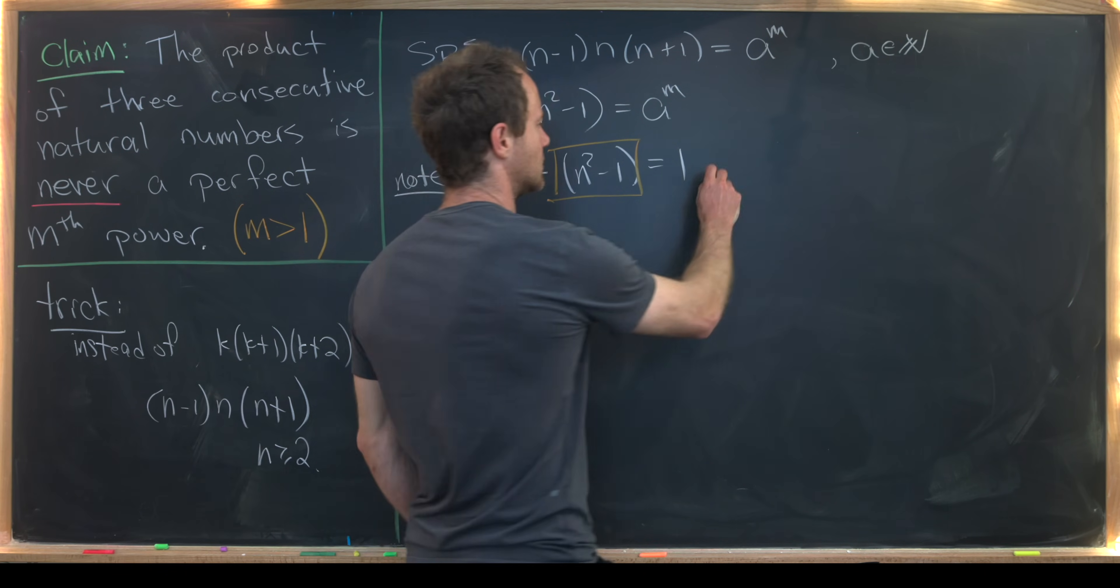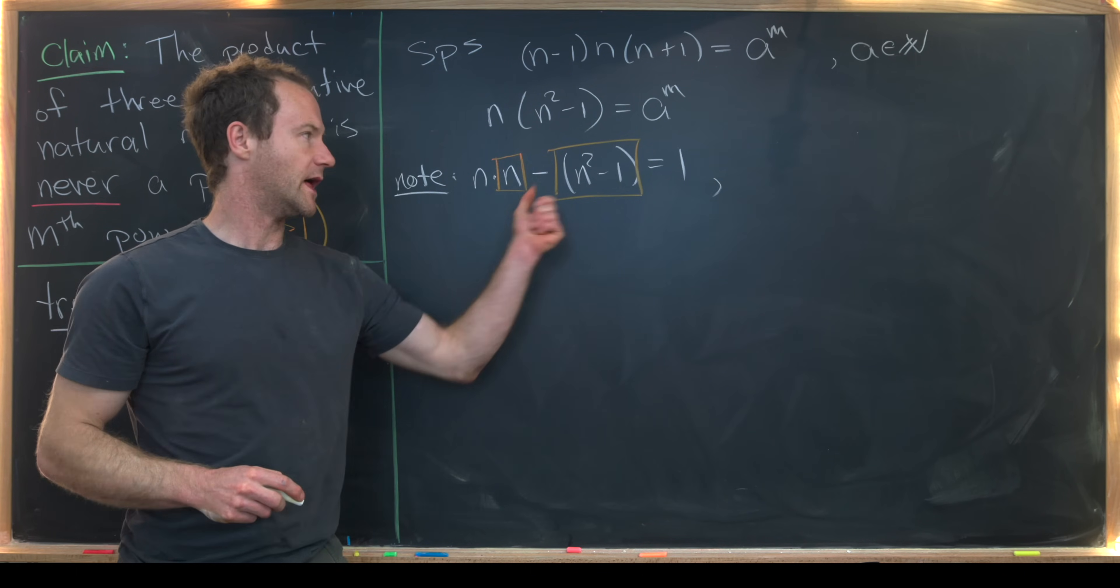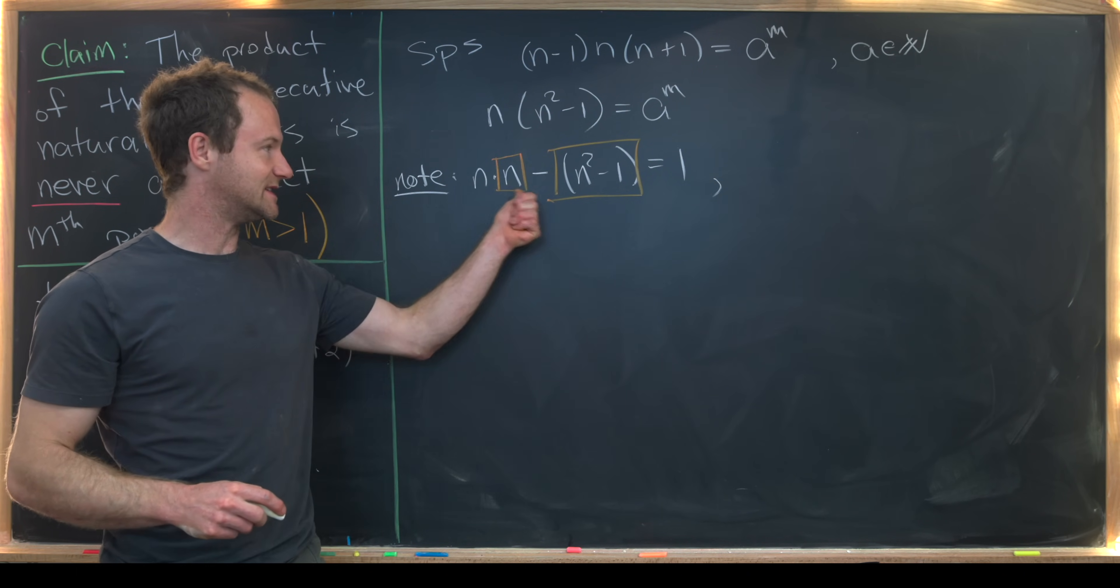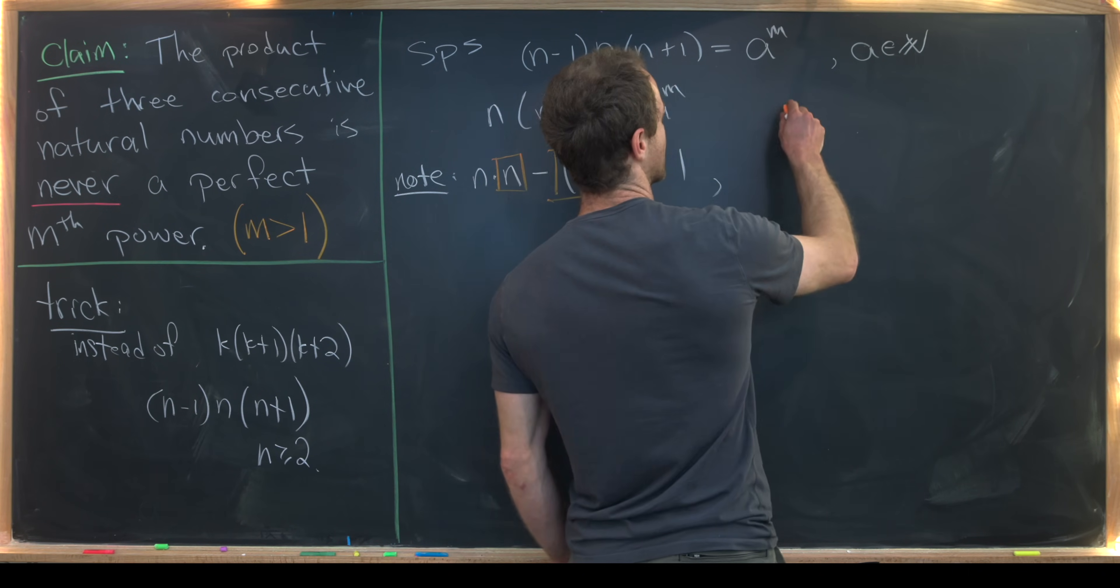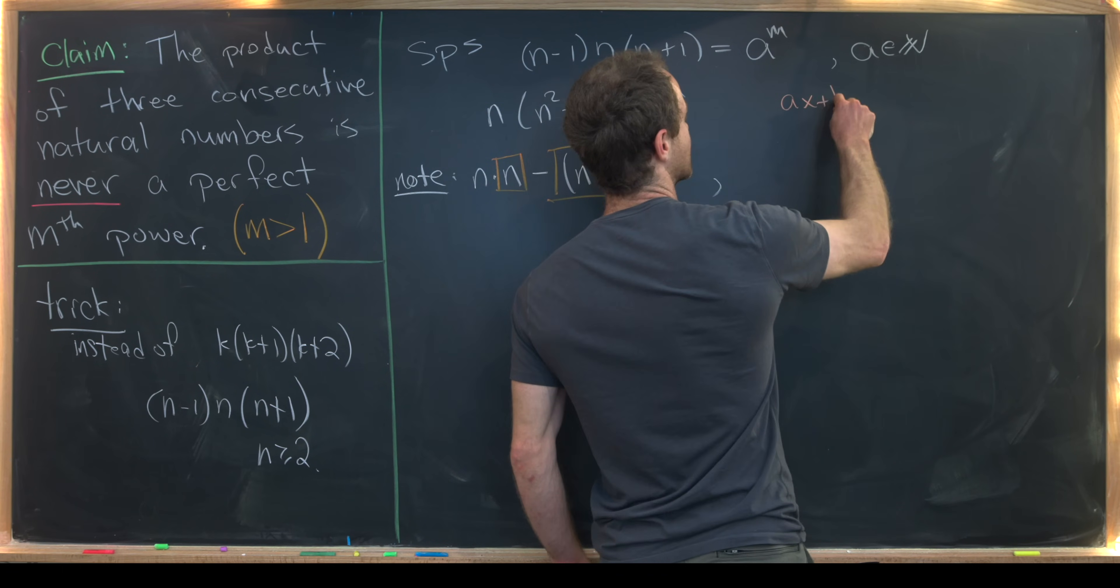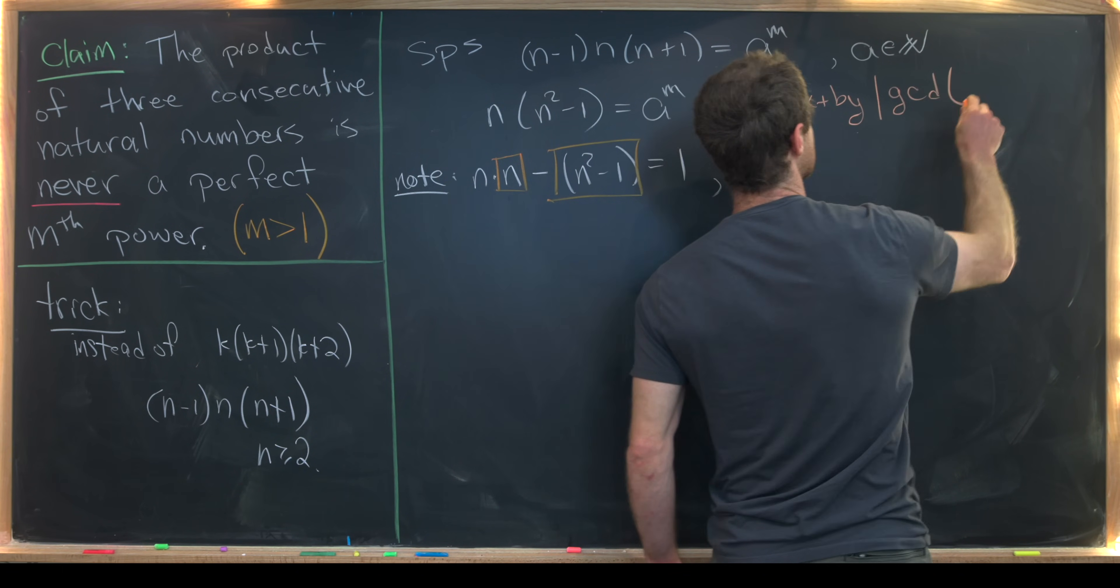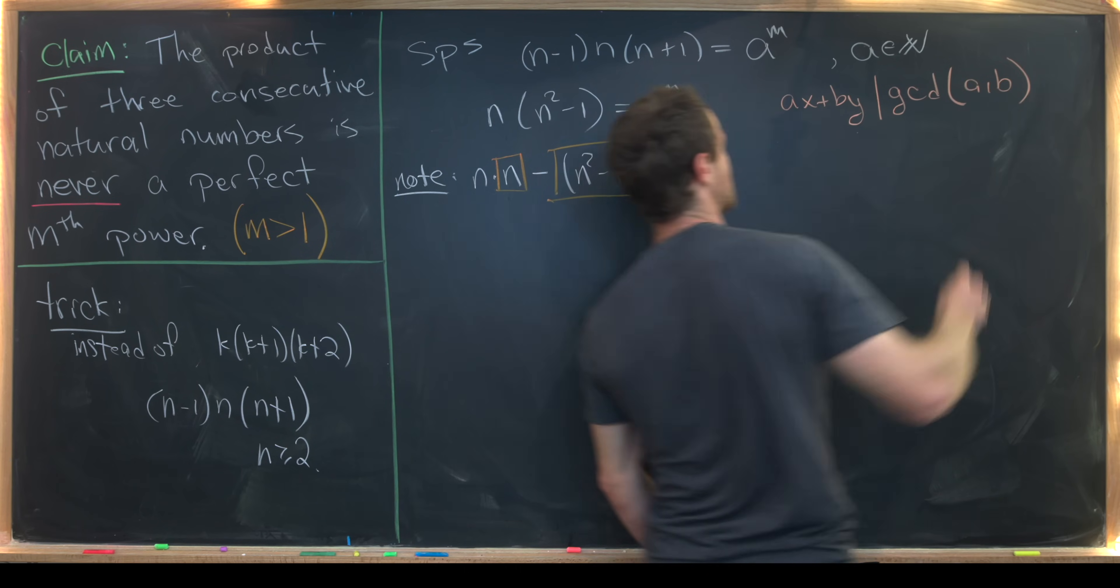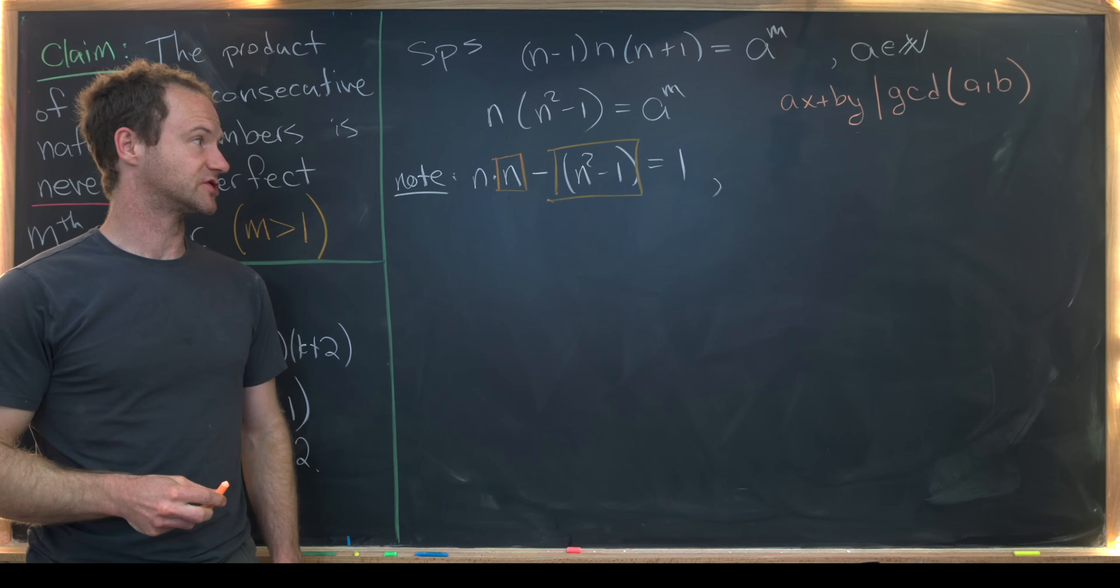But now let's recall that that means that 1 divides the GCD of these two things in these boxes. Well, let's maybe spell that out up here. A x plus b y always divides the GCD of a and b, where a and b are any integers and x and y are any integers.